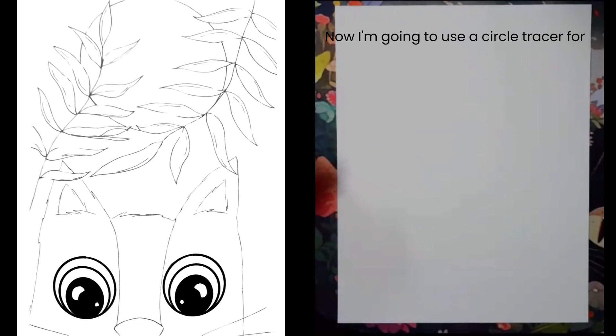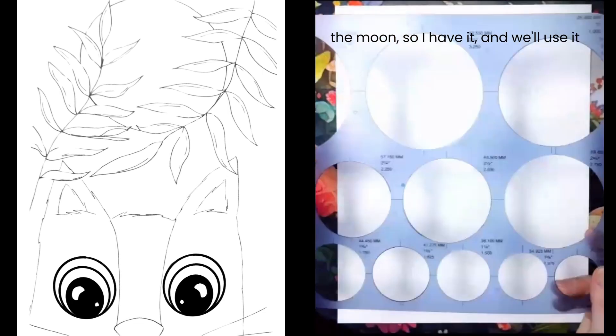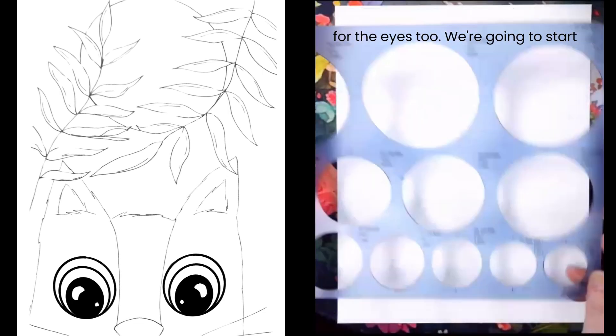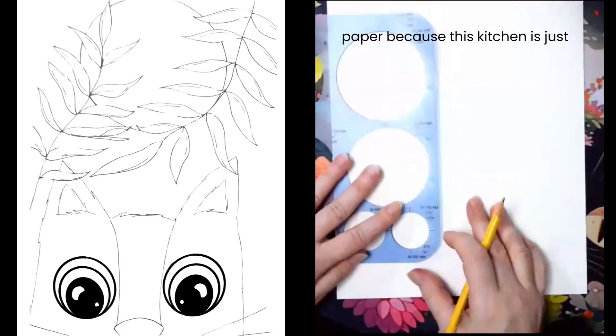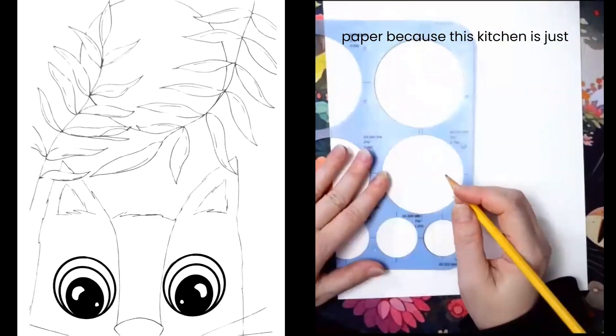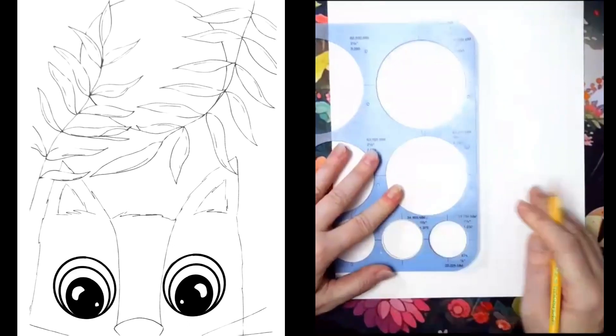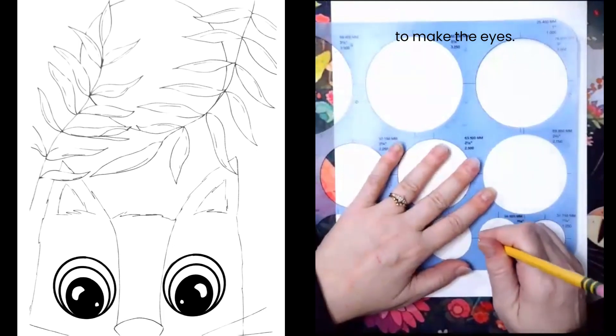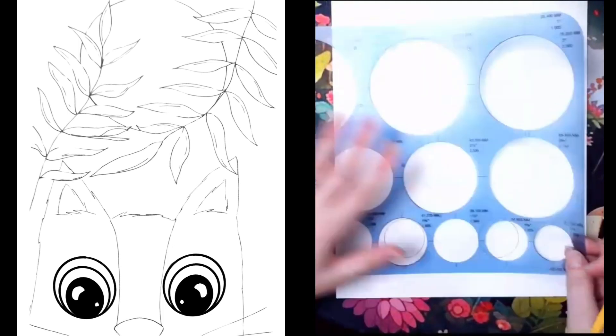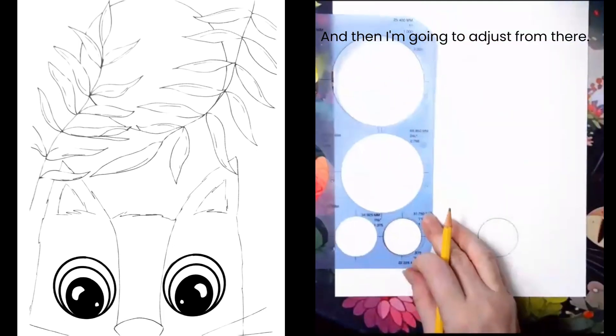Now I'm going to use a circle tracer for the moon and we'll use it for the eyes too. We're going to start with those eyes towards the bottom of our paper because this kitten is just peeking up over the edge. So I'm going to just add some circles to make the eyes and then adjust from there.